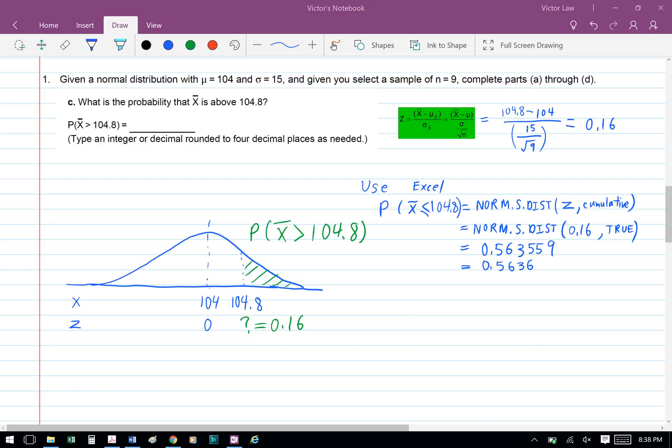Then we're going to use Excel to find the probability that x bar is less than or equal to 104.8. We're going to use the formula NORM.S.DIST to help us find the area to the left of 104.8.